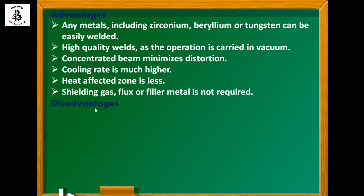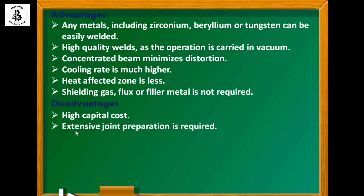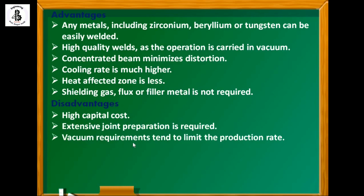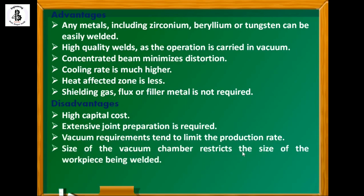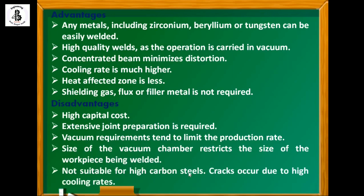Disadvantages: high capital cost due to the electron generator, tungsten material, and the need to control the vacuum chamber. Excessive joint penetration is required. Vacuum requirements tend to limit the production rate. The size of the vacuum chamber restricts the size of the workpiece that can be welded. Not suitable for high-carbon steels as cracks occur due to the high cooling rates.